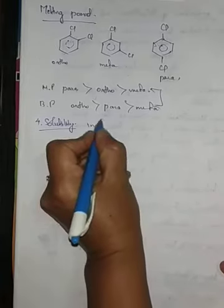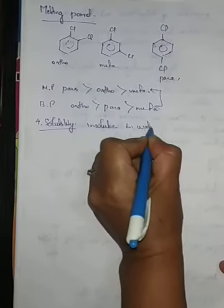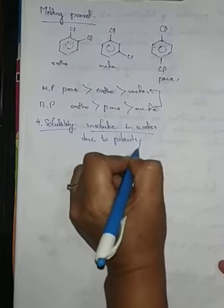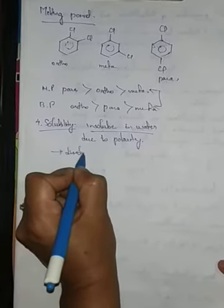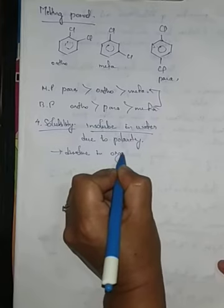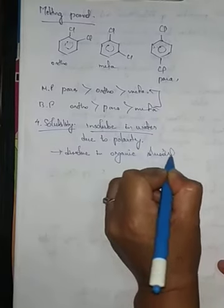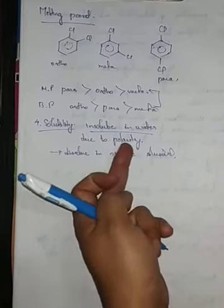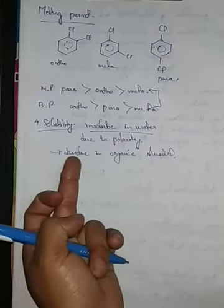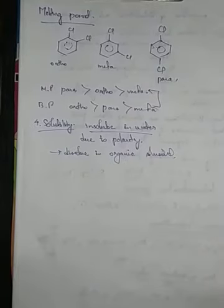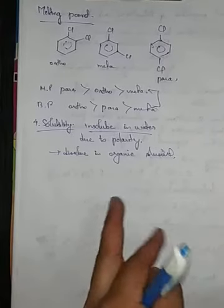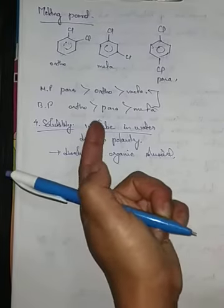The fourth property is solubility. Haloalkanes and haloarenes are insoluble in water due to polarity. They are insoluble because they are not able to form hydrogen bonds with water molecules or break the hydrogen bonds already existing in water. Whereas they dissolve in organic solvents like alcohol, ether, etc.